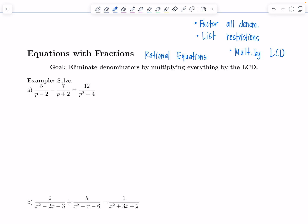Let's look at this first example here. 5 over P minus 2 minus 7 over P plus 2 equals 12 over P squared minus 4. So, first thing, I need to factor all the denominators. And almost everybody is. It's just P squared minus 4 is not factored. So, P squared minus 4, that's a difference of squares. I'm going to factor it into P plus 2 and P minus 2. Now, the next step is I have to list all the restrictions on the variable.